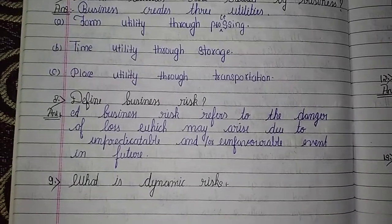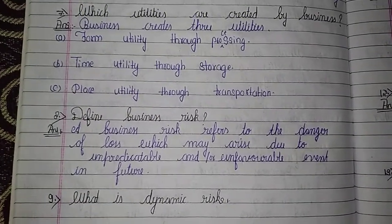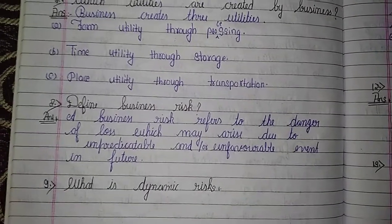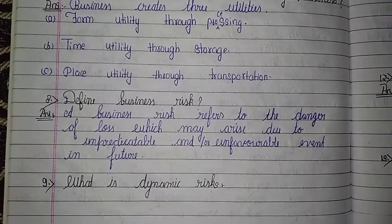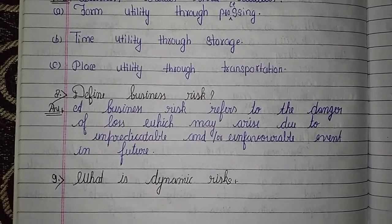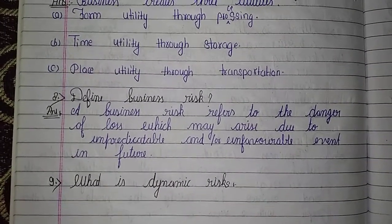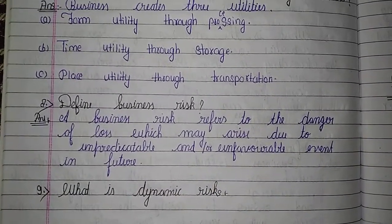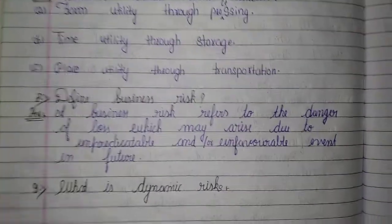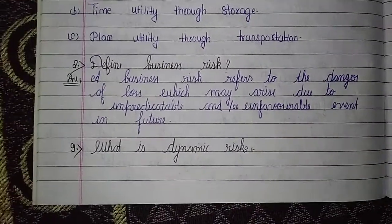We will talk about risks. First, we have to define business risk. A business risk refers to the danger of loss which may arise due to unpredictable and/or unfavorable events in the future.